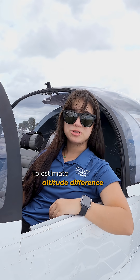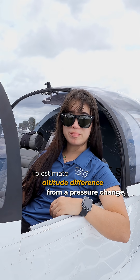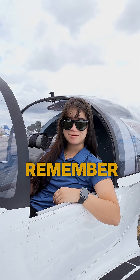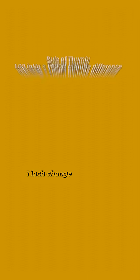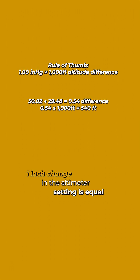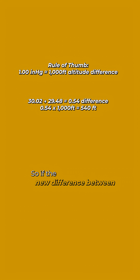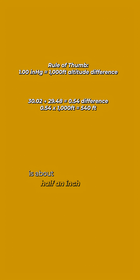To estimate the altitude difference from a pressure change, remember this: one inch change in the altimeter setting is equal to about 1,000 feet. So if the difference between your old setting and the new one is about half an inch, you're off by roughly 500 feet.